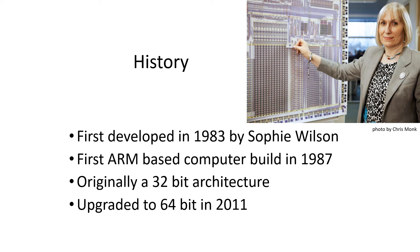The ARM processor was first designed by Sophie Wilson in 1983, and they built the first one four years later. Originally it was a 32-bit architecture, as were almost all computers at that time. It has since been upgraded to a 64-bit machine.